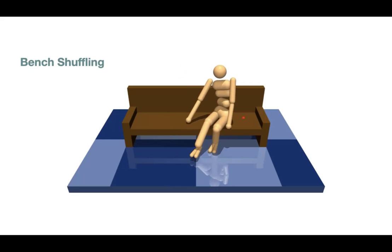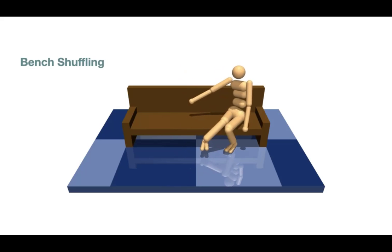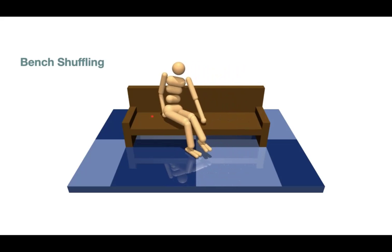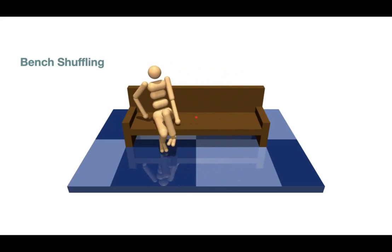This is another example of an underspecified motion, where with only one pelvis contact pair moved along the bench, the character is able to coordinate the rest of the body and shuffle from side to side.